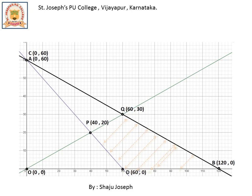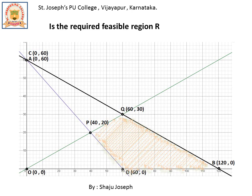Looking at the graph, the point (10, 0) lies on the lower right side of the line through O, P, and Q, while (0, 10) lies on the upper left side, which was false. Hence the actual feasible region is bounded by the points P, Q, B, and D, which is the shaded region on the graph. The corner points of this feasible region are: P (40, 20), Q (60, 30), B (120, 0), and D (60, 0).